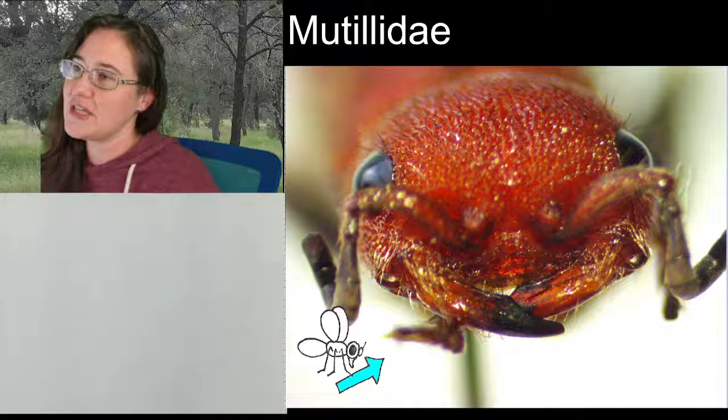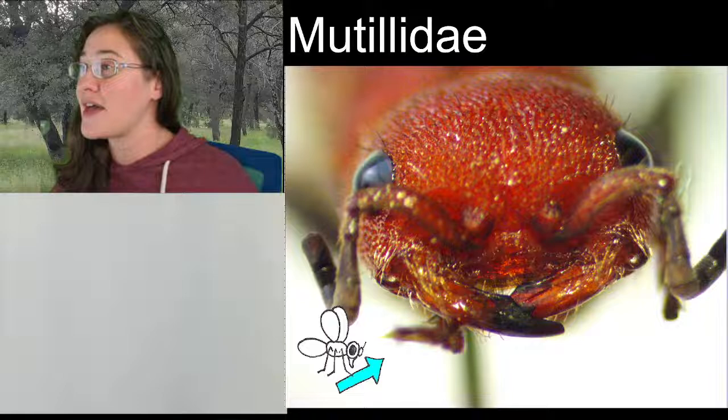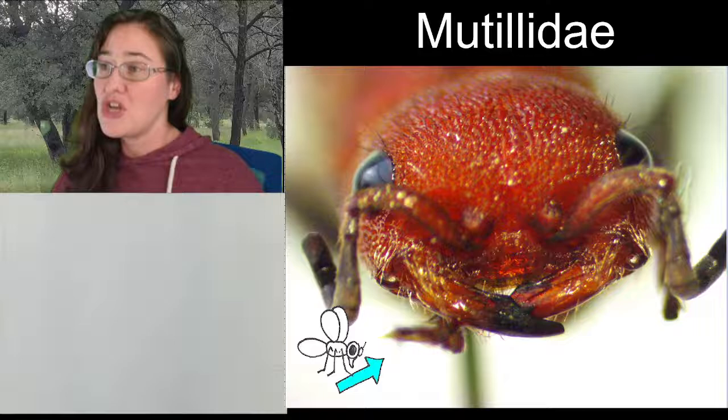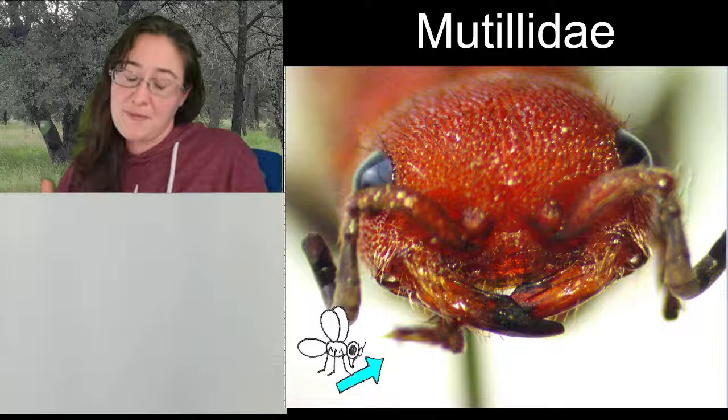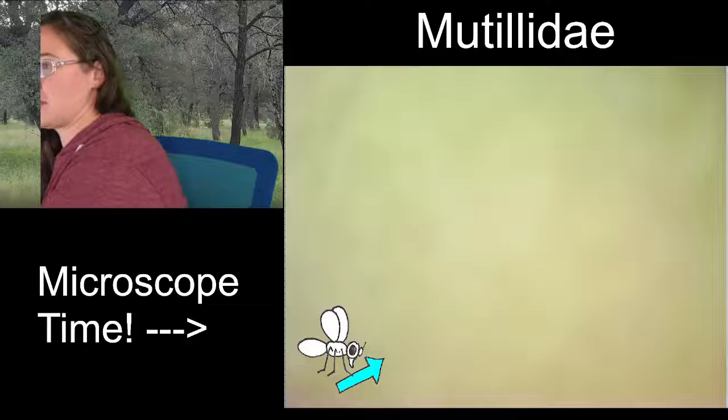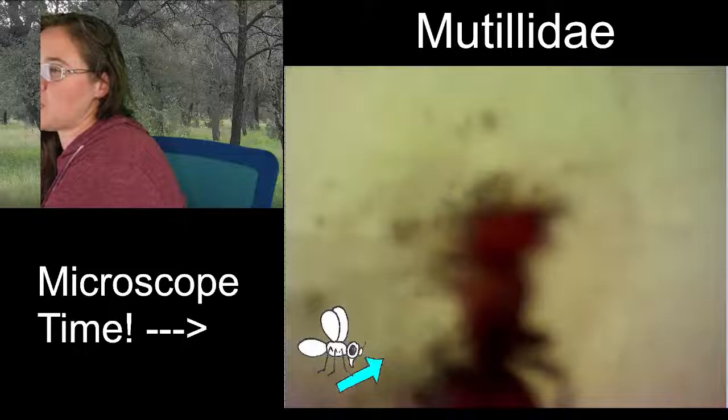This is a species of velvet ant and all velvet ants are in the family Mutillidae. Even though we technically call them velvet ants, they are not true ants because ants have their own family. Mutillids, or velvet ants, are actually more like a different type of wasp — without any wings.